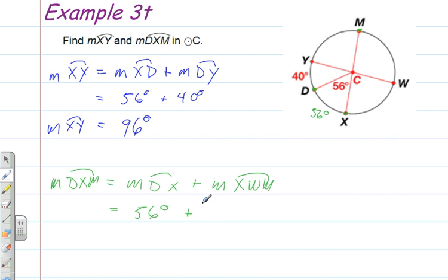Since arc XWM is a semicircle, it measures 180 degrees. When you add those two numbers together, it gives you 236 degrees.